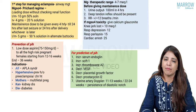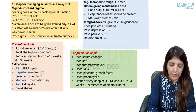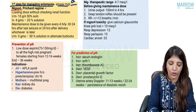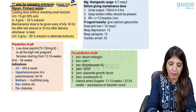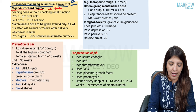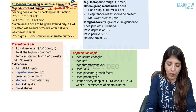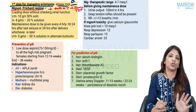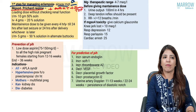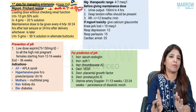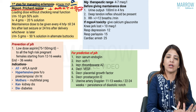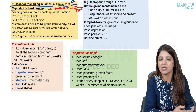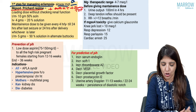Management of eclampsia: the first step is airway management — a very important point. Then give magnesium sulfate plus antihypertensives, and do immediate termination of pregnancy. The first step is airway management and pull up the rails so the patient doesn't fall. Then give magnesium sulfate using Prichard regime, antihypertensives, and immediately do termination of pregnancy.